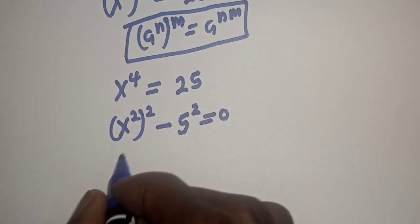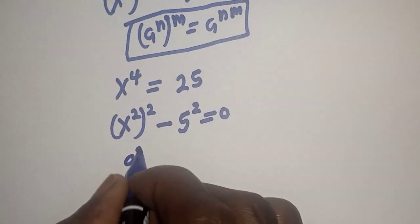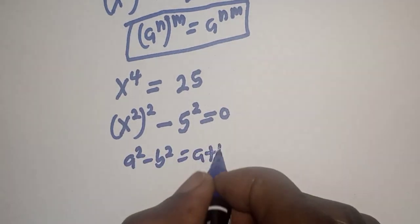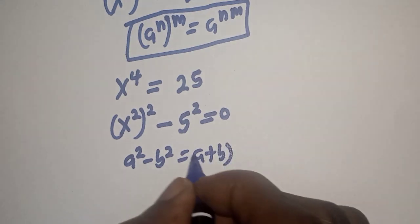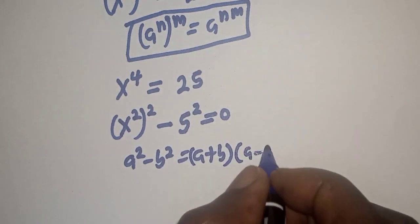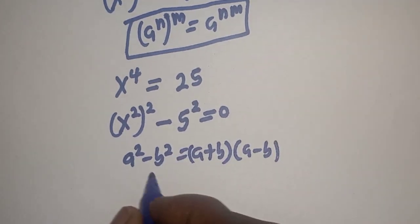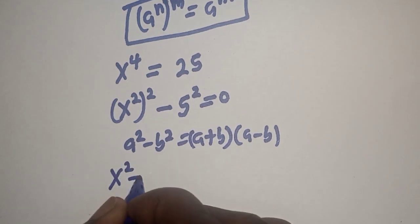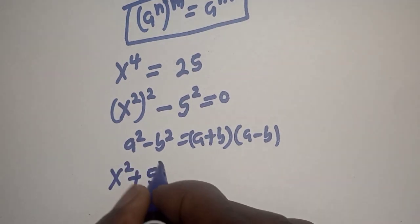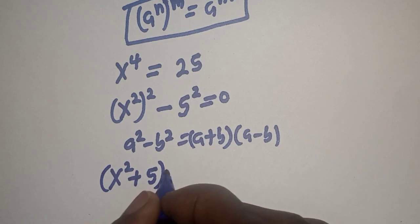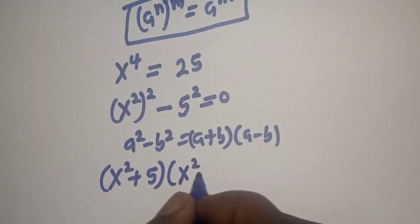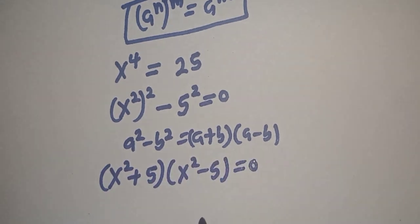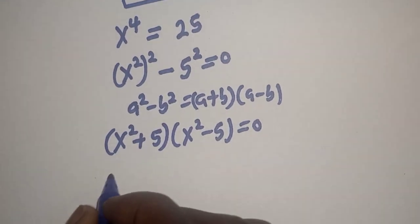Now, this is a difference of two squares. A squared minus B squared is equal to A plus B, bracket, A minus B. So, this gives us S squared plus 5, bracket, S squared minus 5, is equal to 0.